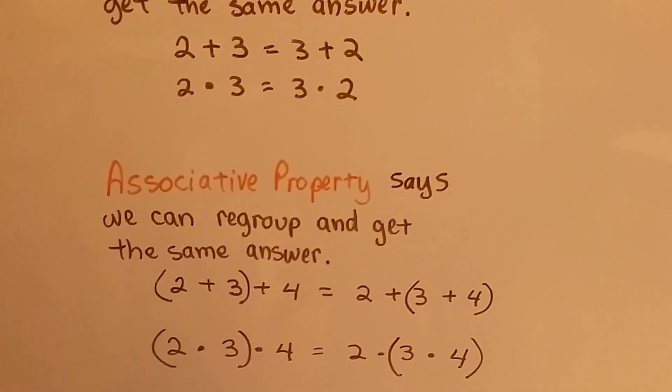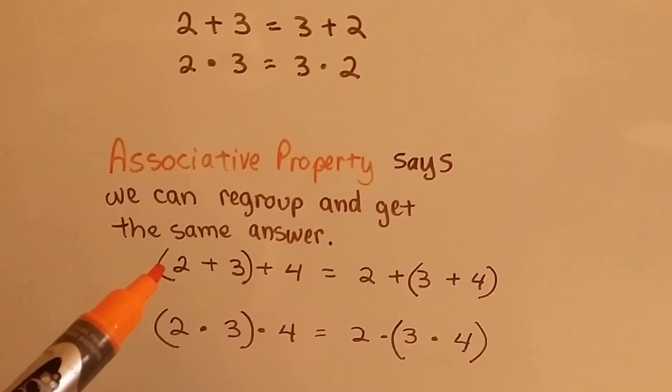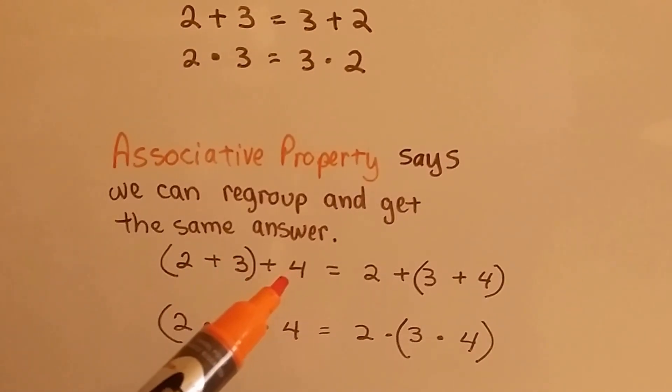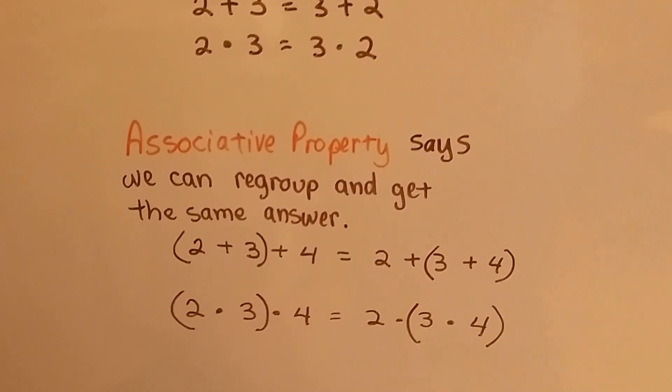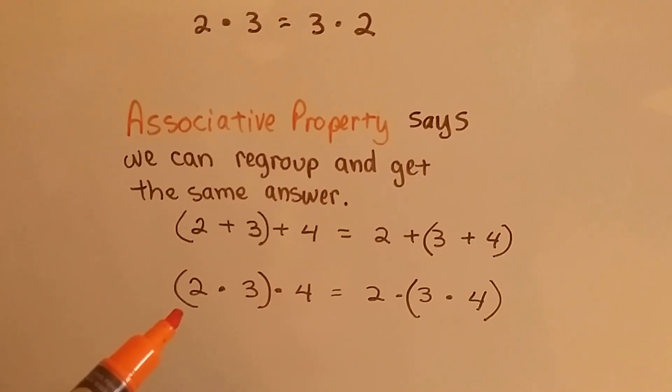The associative property says we can regroup and get the same answer. In the associative property of addition, it says 2 plus 3 can be added together and then add 4, and that's going to be the same thing as adding 3 plus 4 and then adding 2.